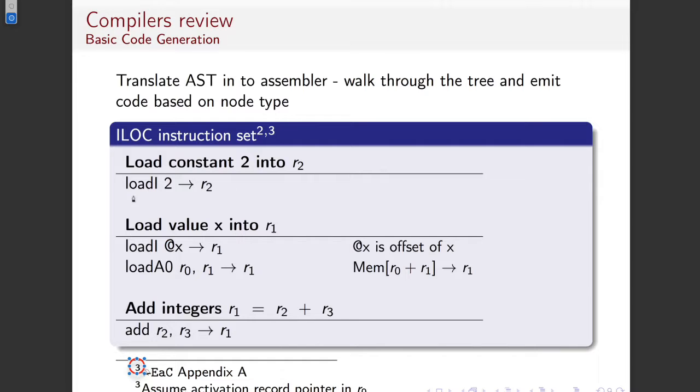So here we're going to load an immediate constant. Which immediate means the same. You don't need to calculate. Right. So load a constant integer in this case, load two into register two. So loadI 2 goes to r2. If we want to load a value into X, then load a value into a register. This is load a value from memory.